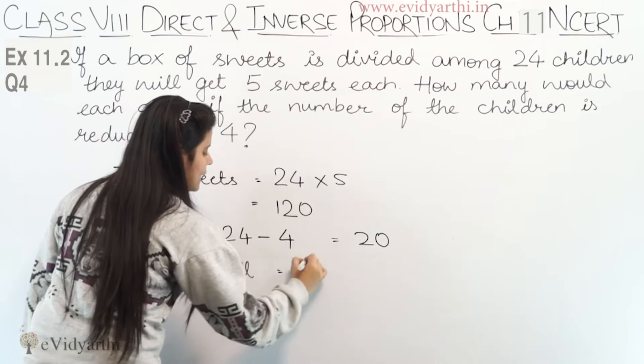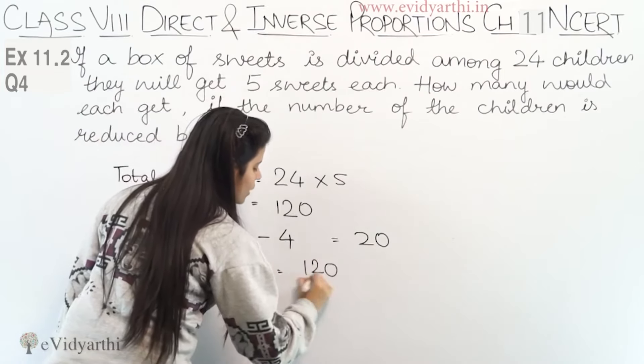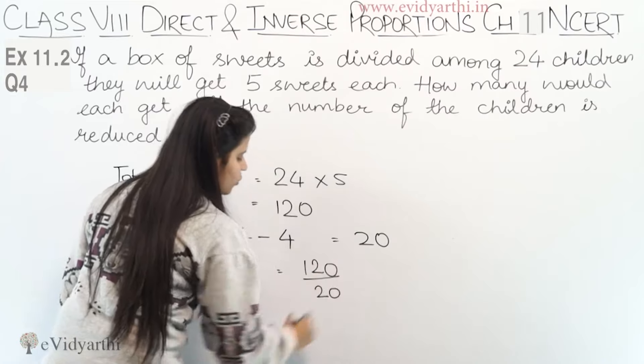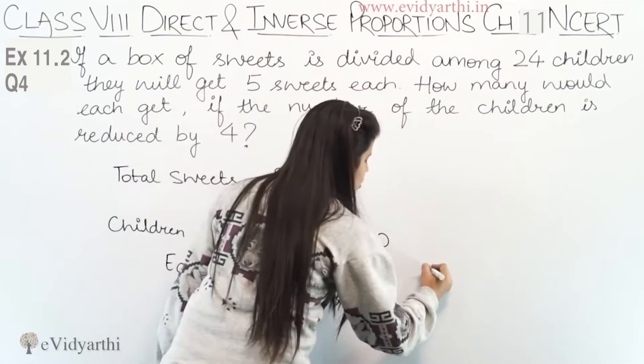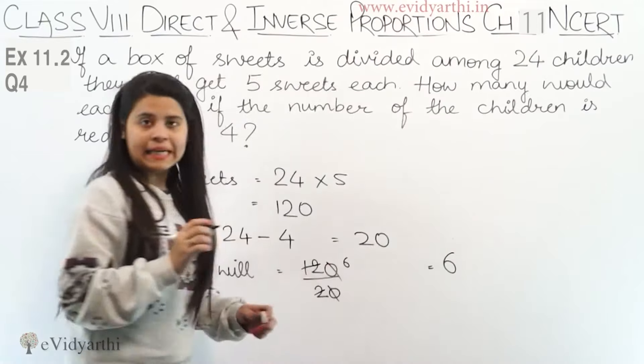Each will get how many sweets? 120 divided by 20. Zero-zero cancel, 2 and 12, this will be 6. So this means 6 sweets each.